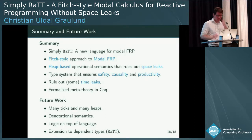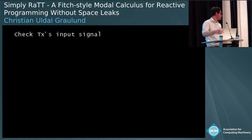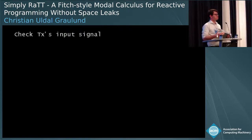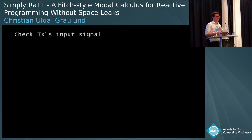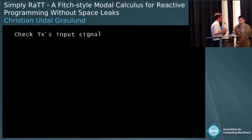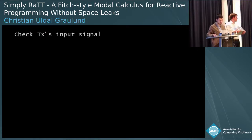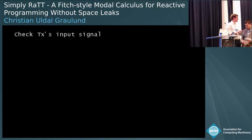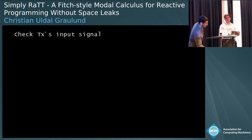A final Slido question asks: could you use two spaces — 'now' and 'next' — and never garbage collect anything that is not stable? The speaker says they're not sure — maybe — and suggests coming to ask afterwards if it's interesting. Another question asks whether you can define streams from basic type constructors and modalities — sum, later, and fixed points. The speaker is uncertain and again invites discussion afterward.